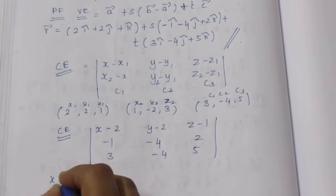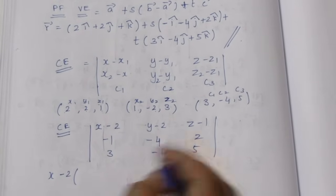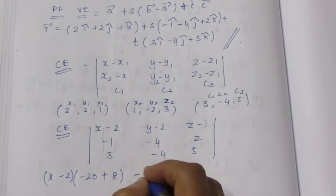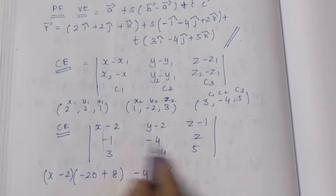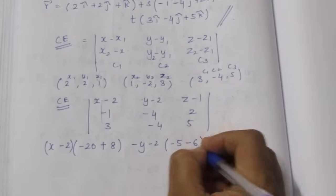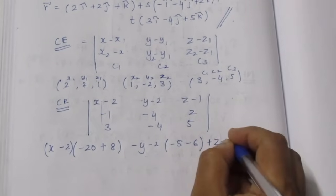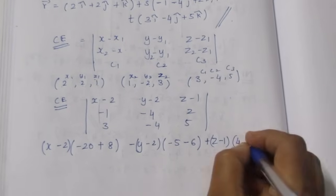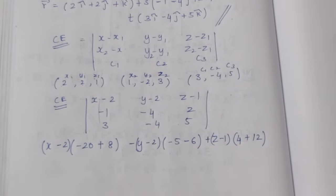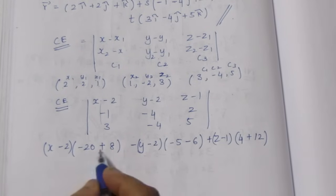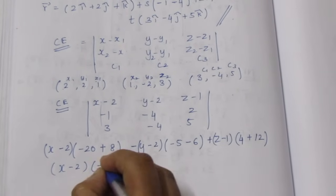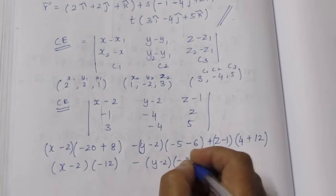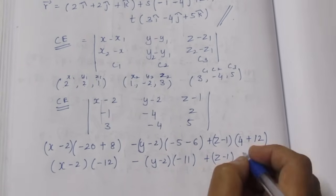Expanding by the first row: (x minus 2) gives minus 20 plus 4, so minus 12 contribution times 2, equals minus 8. Minus (y minus 2) row gives minus 5, minus 6. Plus (z minus 1) gives 4 plus 4, so 3's are 12, giving 16. So the expansion is: (x minus 2)(minus 12) minus (y minus 2)(minus 11) plus (z minus 1)(16). Expanding: minus 12x plus 24 plus 11y minus 22 plus 16z minus 16.